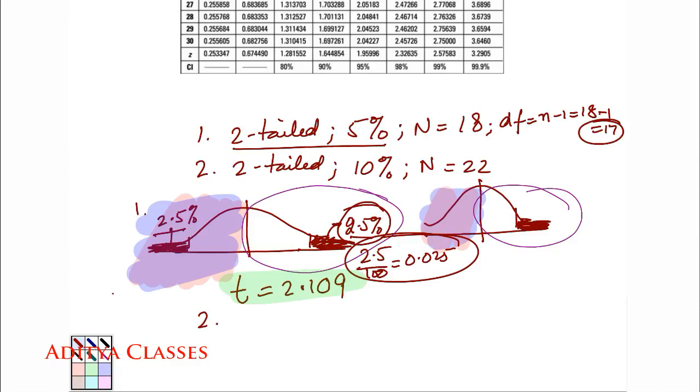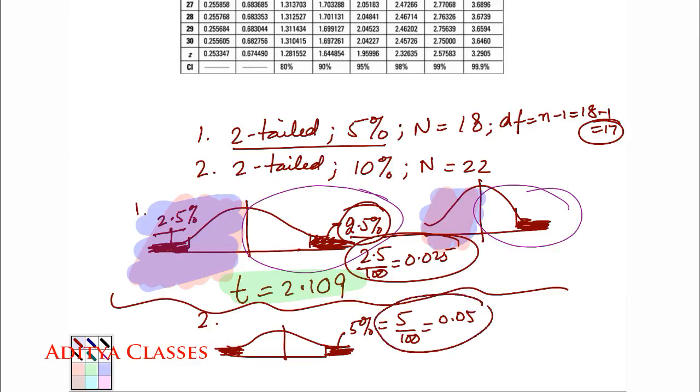Was that simple? Let us check it with our second question. What is second question? It is 2-tailed 10%. Let us make it a quick one. 2-tailed 10%. 2-tailed 10% total. So, 1 tail will have 5%. So, 5% becomes 5% that is 0.05.